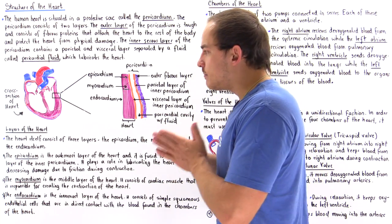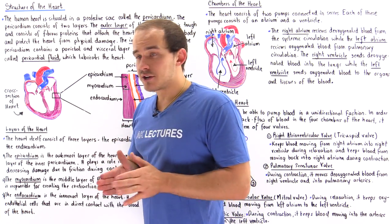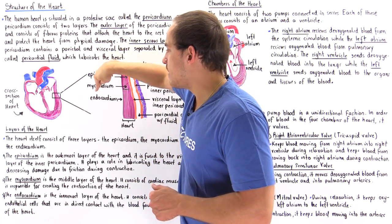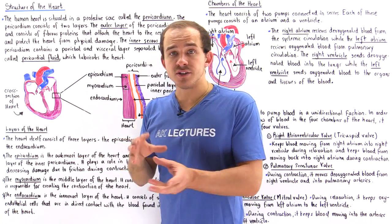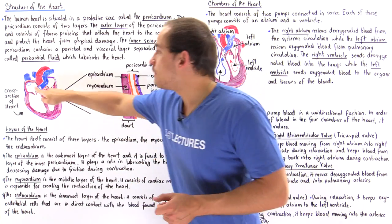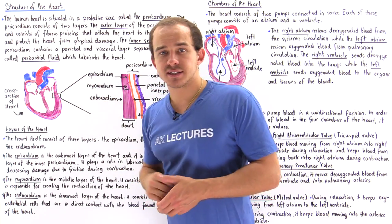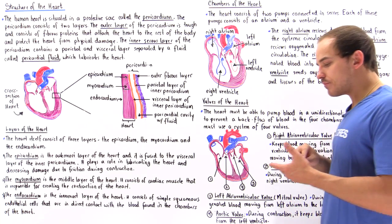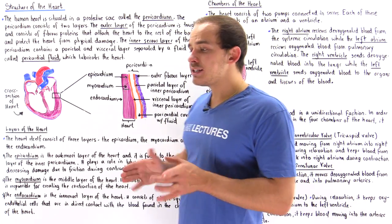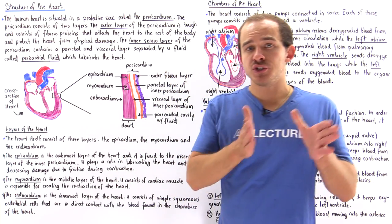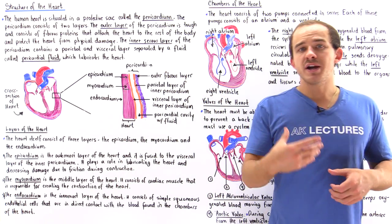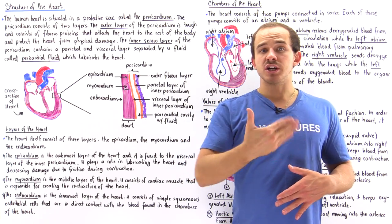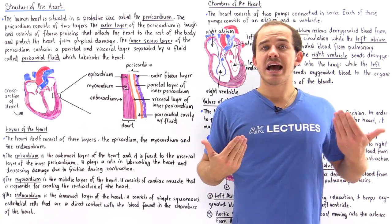The heart can be broken down into three layers: the epicardium, the myocardium, and the endocardium. These three layers form four different chambers inside our heart. The entire heart can be broken down into two pumps — examining the body from the front, we have the right side and the left side.